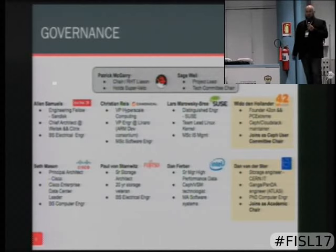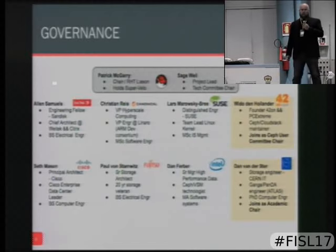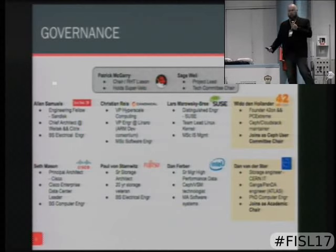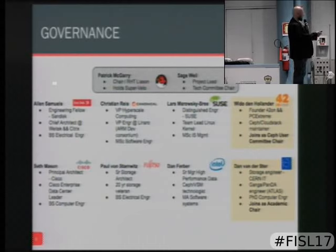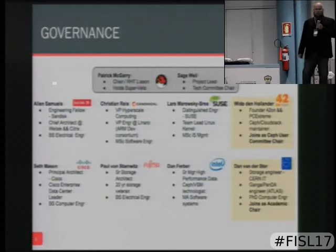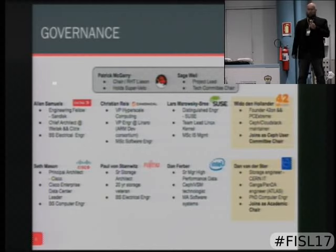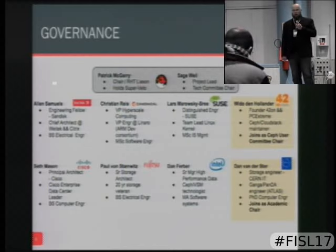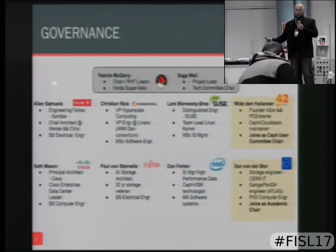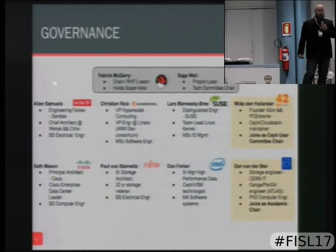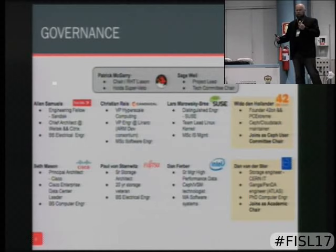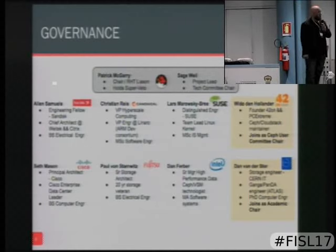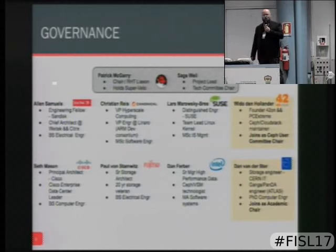Sage, our founder, sets the technical direction of Ceph. The board is simply an advisory board used for communication and coordination — they don't control the technical roadmap, which follows the typical open source meritocracy. Vito Denhollander is the chair of our user committee, representing individuals who have something to say. Dan Vanderster from CERN represents the academic world in Ceph — we felt it was very important from our academic roots to make sure their use cases were represented. The other board members, as of October last year, are some of our largest contributors.